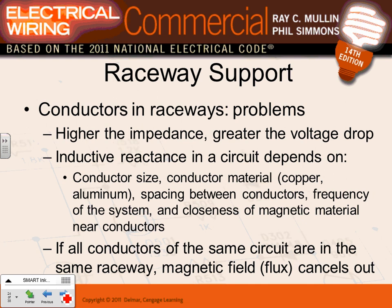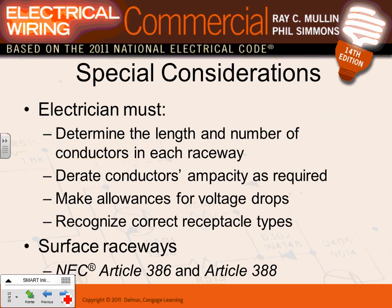All conductors of the same circuit must be installed in the same raceway because it reduces inductive heat and also reduces voltage drop. When all conductors are in the same raceway, the magnetic fields cancel. So phase A, B, C, neutral, and ground - all go inside the same conduit.